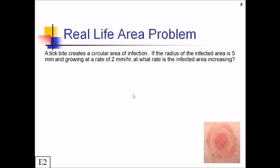Let's do our first real life problem now. A tick bite creates a circular area of infection. If the radius of the area is increasing at 5 millimeters and growing at a rate of 2 millimeters per hour, at what rate is the infected area increasing? All right, well, pause the video and see if you can try this one on your own. There's a formula you could bring out right away from your past geometry class. And that formula, unpausing the video here, that formula is area equals pi r squared.